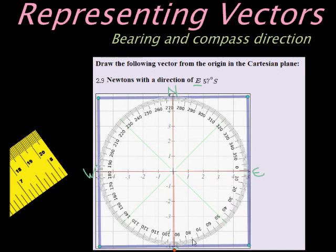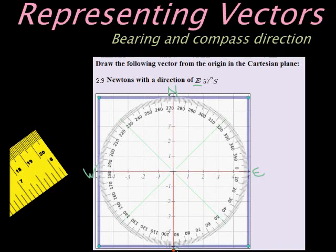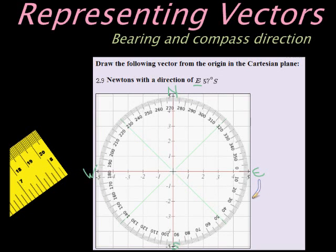There we go. Zero is on east, and we must go 57 degrees south. So from east, we are heading 57 degrees south, which means it's in that direction. So 57 degrees.